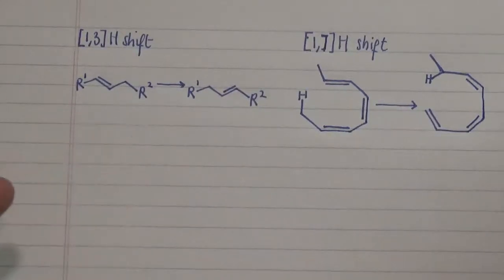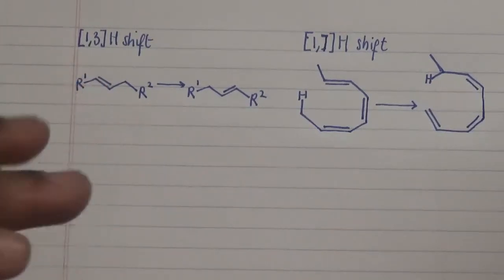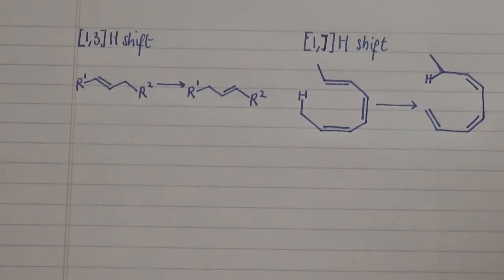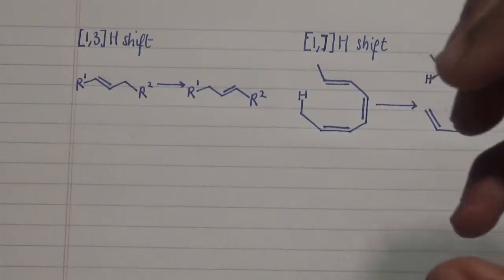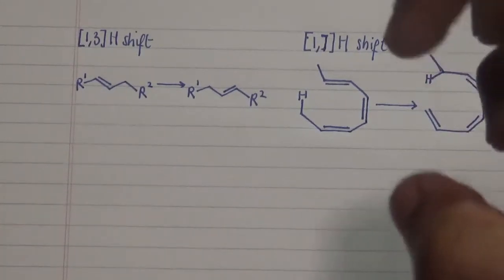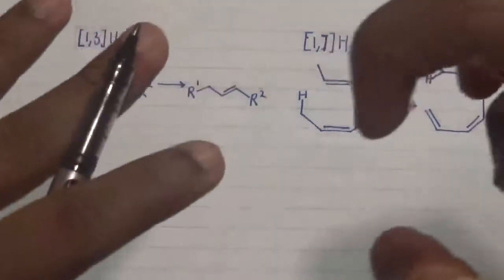Hello everyone again and welcome to my channel. On our previous video we looked at a 1,5 hydrogen sigmatropic shift and we looked at how that is actually described orbitally where we look at how our 1s orbital of hydrogen actually shifts on the particular plane of a cyclopentadiene from one particular carbon.